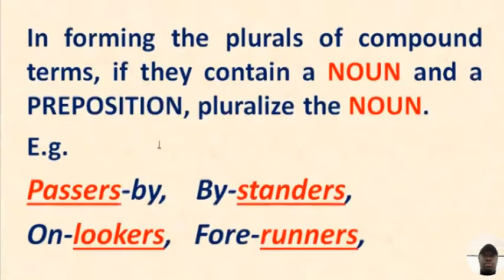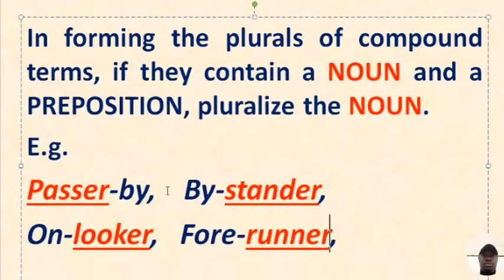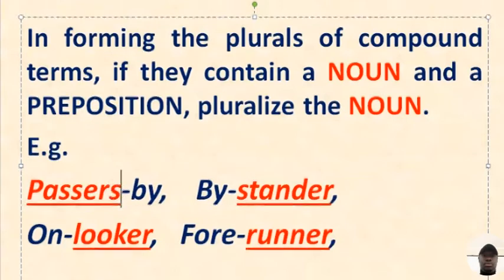Rule two: in forming the plurals of compound terms, if they contain a noun and a preposition, just pluralize the noun. For example, passer-by — passer is a noun, by is a preposition — so what you need to do is just add an S to the noun: passers-by. Bystanders.